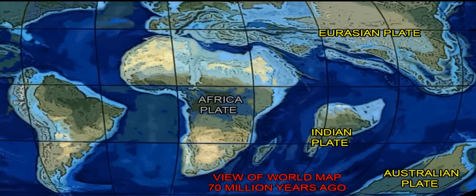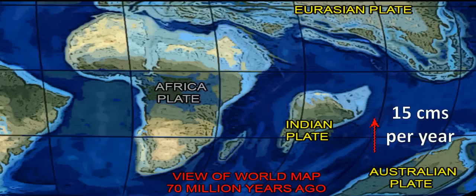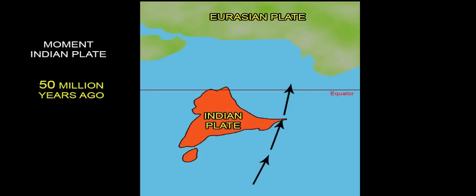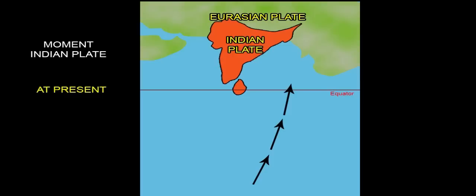According to the theory of tectonic plates, the Indo-Australian plate was moving at about 15 centimeters per year towards the north. It is assumed that the Indian plate and Australian plate have been separate since about 100 million years ago. The continental collision originated along the convergent boundary between the Indo-Australian plate and the Eurasian plate.